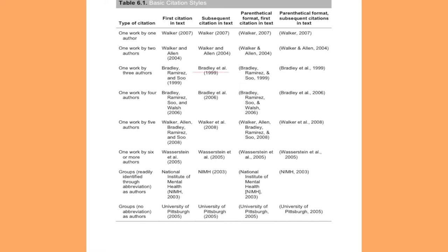The first two columns of the chart show you how to place in-text citations within your written work, while the last two columns show you how to place parenthetical citations at the end of quoted or paraphrased material.